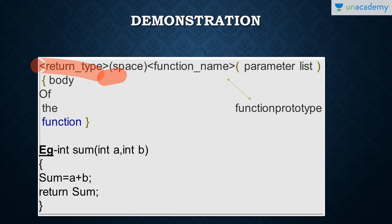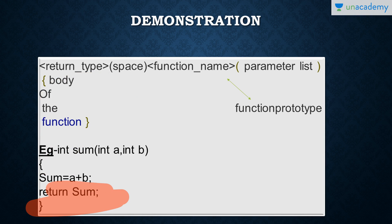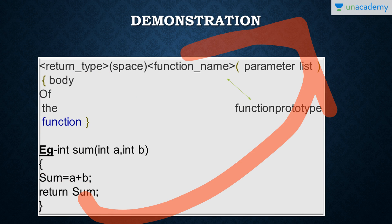For example, return type is int, function name is sum, parameter list is a and b. The body calculates sum as a plus b, and returns sum. This sum variable will return an int type value, and whatever value is in sum variable will be returned to the called function.